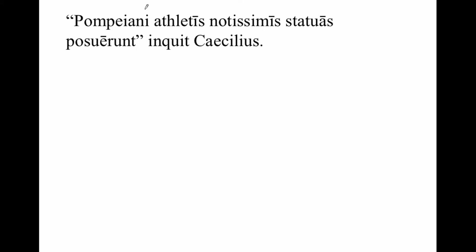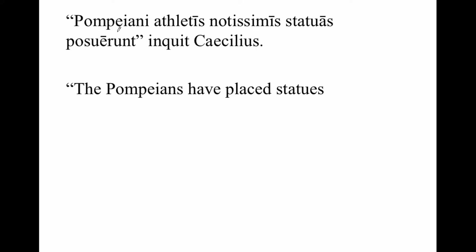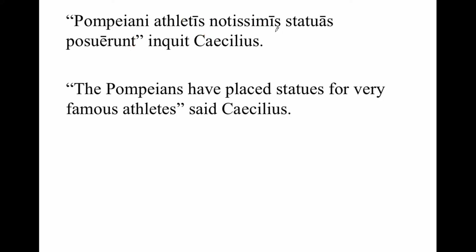Pompeiani atletis notissimis statuas posuerunt, inquit Caecilius. The Pompeians have placed statues — this is the past tense of the verb 'ponere,' meaning to place. These are dative plurals. This ending, a long I-S, pronounced like 'notissimis' — this 'ees' ending — is the dative plural ending for first and second declension nouns. They have placed statues for very famous athletes, said Caecilius.